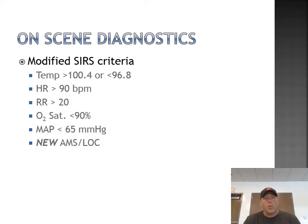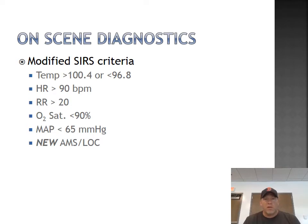One of the most important things here is early recognition — catching the fact that somebody has a complaint that needs early sepsis screening so that we get them to the hospital and clearly communicate to the people who take over that this patient has a probable infectious process making them sick. As we do our vital signs, we want a great set — good manual blood pressures with accurate readings, and we want to measure temperatures.